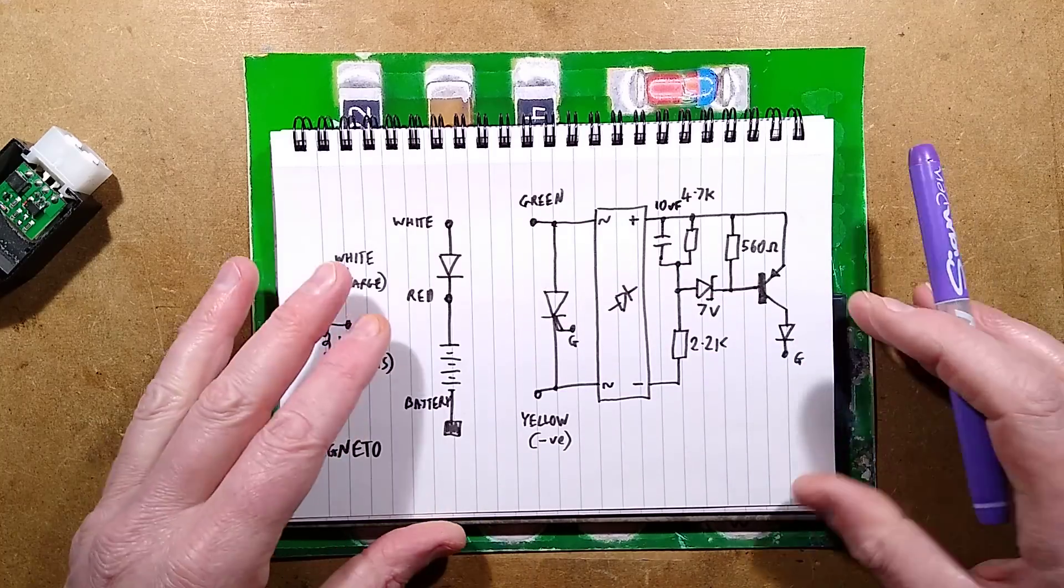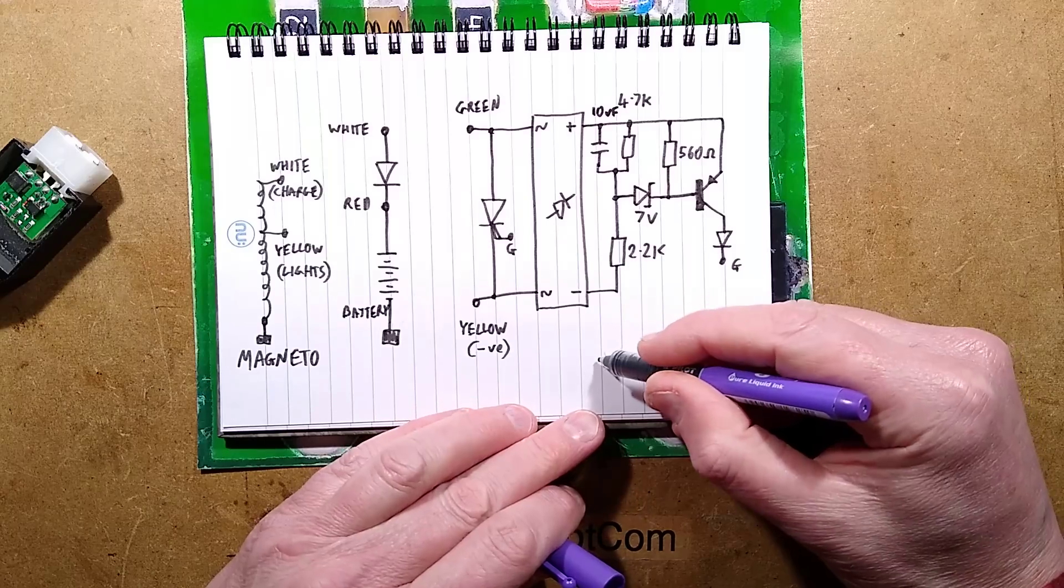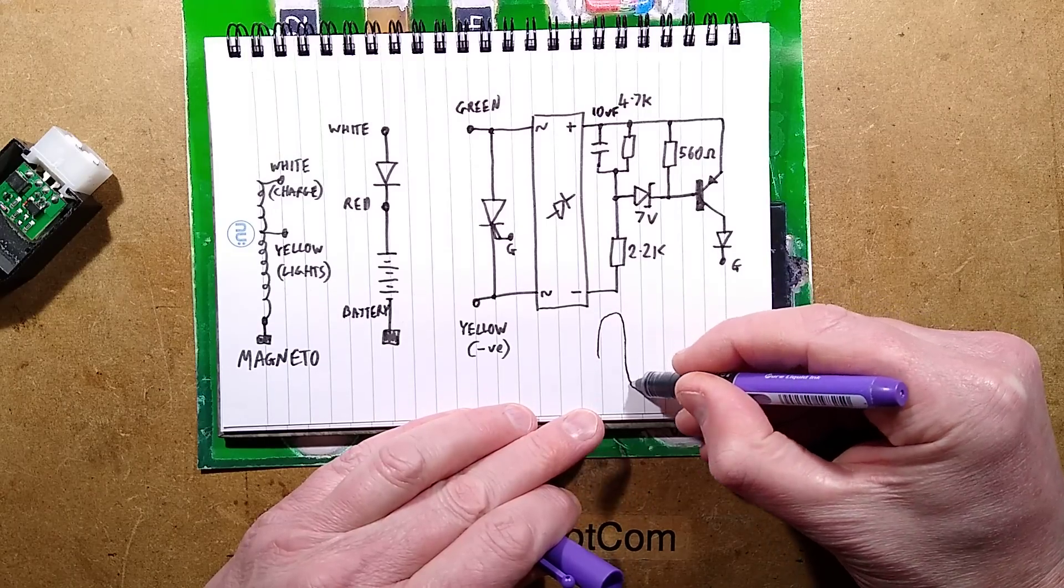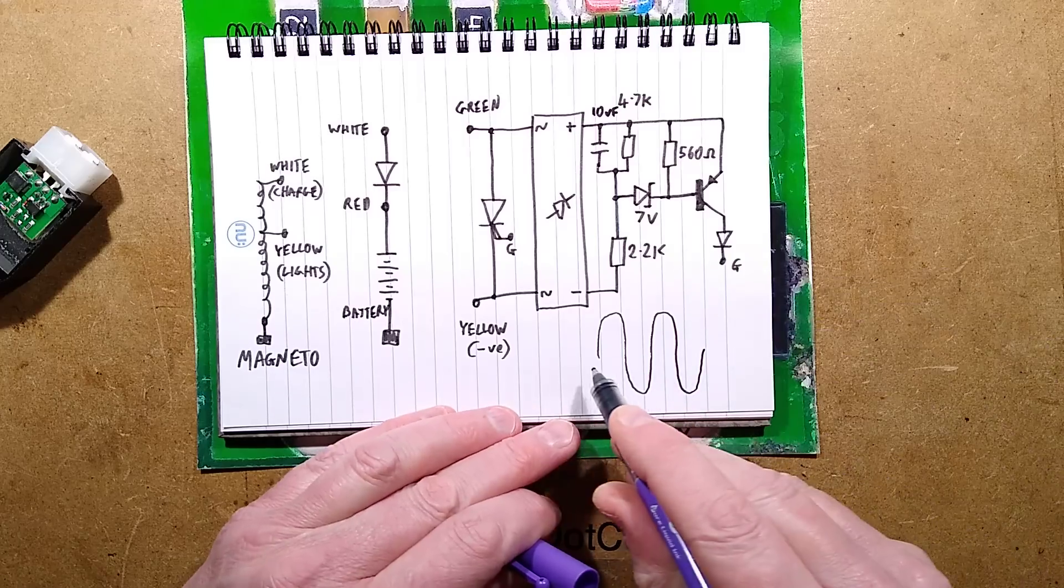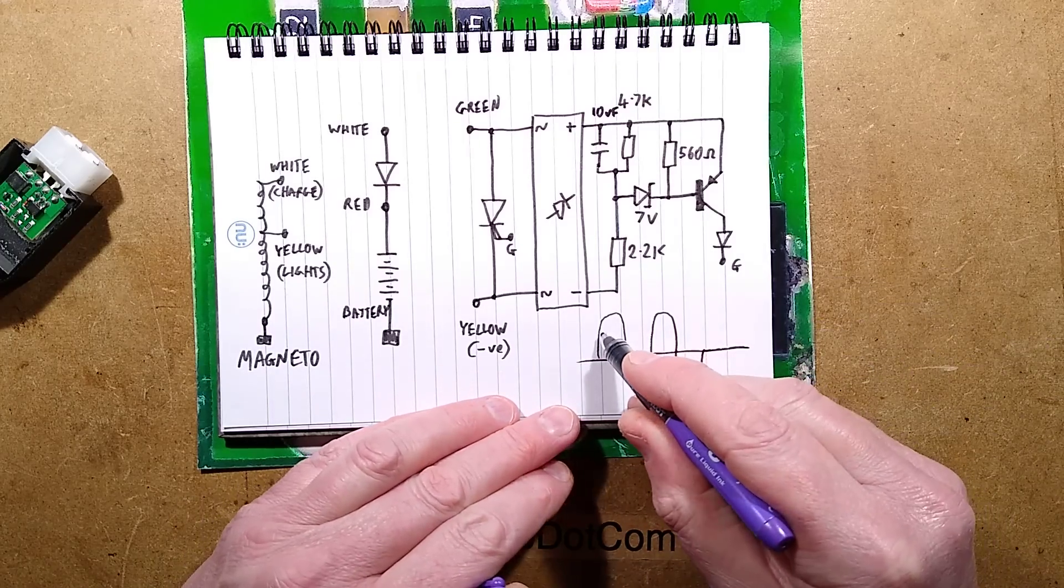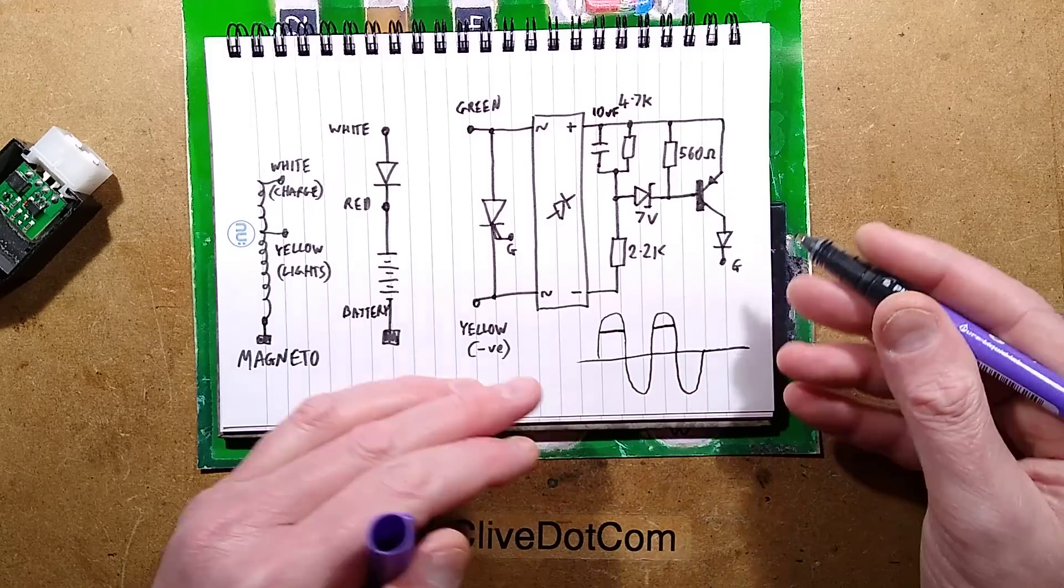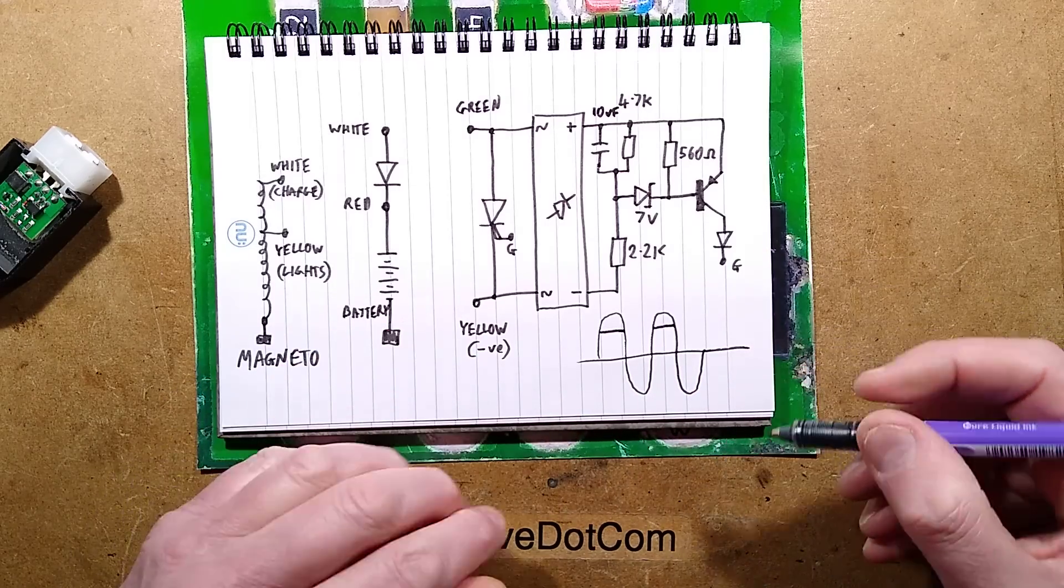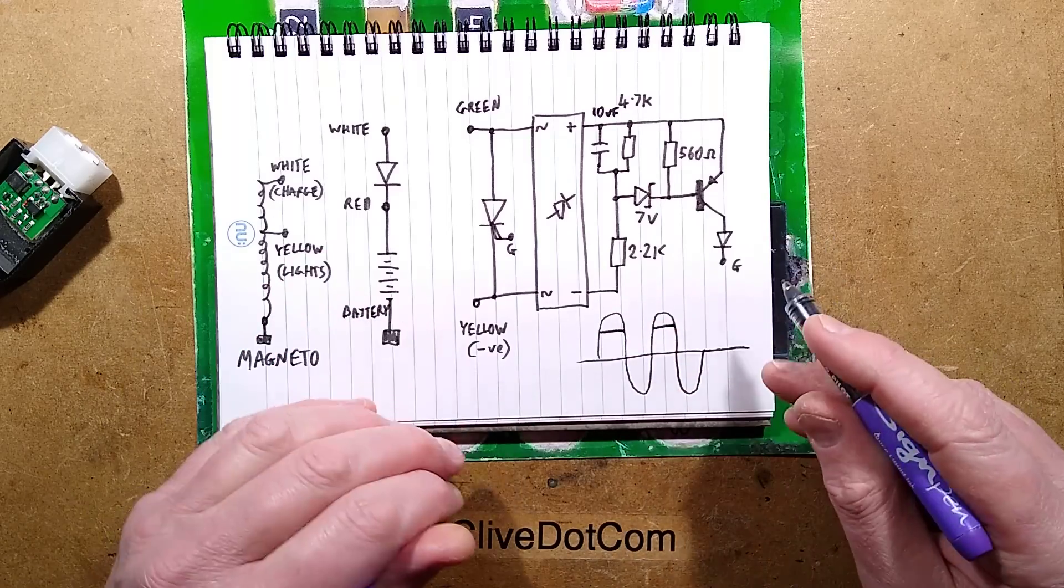The magneto output is quite a high voltage because it will have a fairly high open circuit voltage, particularly at high revs. The battery voltage will effectively cap it on the positive going waves, capping it down to about 15 volts. On the other side, it does something very odd.